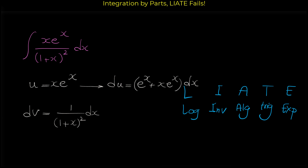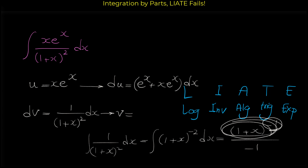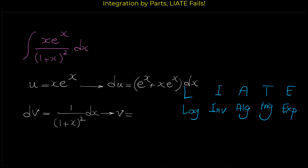If we integrate dv to find v, v is the integral of 1 over 1 plus x squared. Moving 1 plus x squared to the numerator gives 1 plus x to the negative 2. By the power rule, the integral is 1 plus x to the negative 1 over negative 1, which we rewrite as negative 1 over 1 plus x. So v equals negative 1 over 1 plus x.